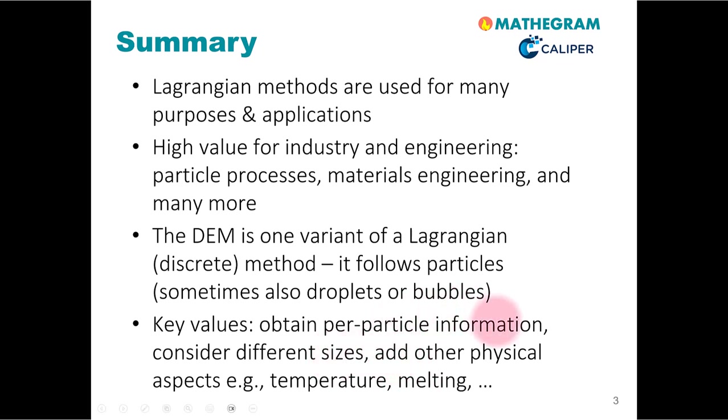Last but not least, one can consider other physical aspects with the discrete element method since we follow particles. These are for example the temperature of particles, the melting behavior of particles, or the moisture content of the particle as it changes in a dryer. All this makes the discrete element method ideally suited for engineering applications like chemical engineering studies where we are interested in the performance of an industrial process.